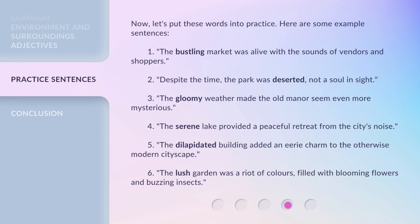Now, let's put these words into practice. Here are some example sentences. One: the bustling market was alive with the sounds of vendors and shoppers. Two: despite the time, the park was deserted, not a soul in sight. Three: the gloomy weather made the old manor seem even more mysterious. Four: the serene lake provided a peaceful retreat from the city's noise. Five: the dilapidated building added an eerie charm to the otherwise modern cityscape. Six: the lush garden was a riot of colors, filled with blooming flowers and buzzing insects.